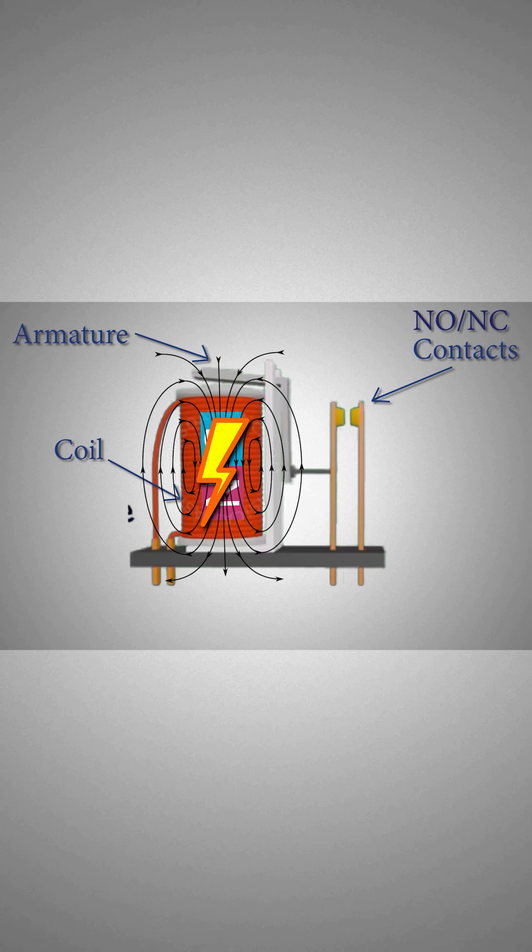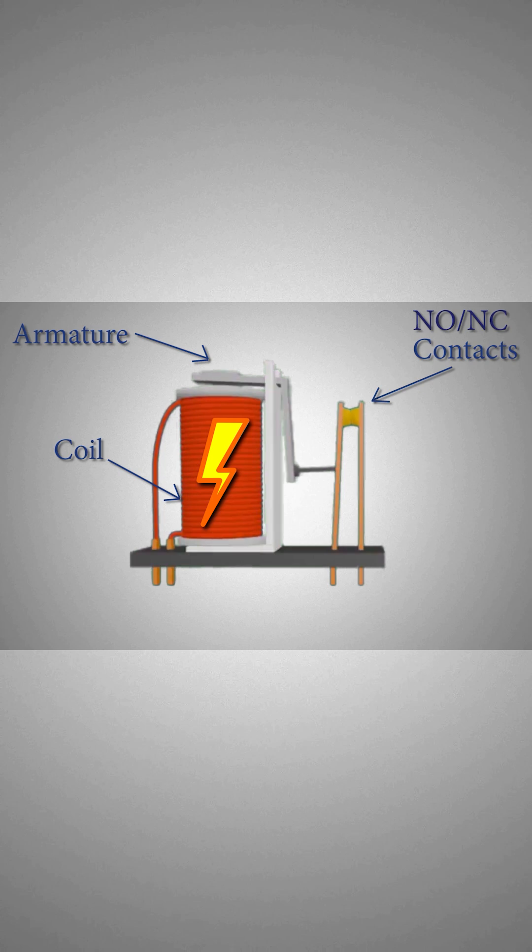This electromagnet attracts armature towards it and the relay contacts move towards each other and closes. The purpose of these relay contacts is to switch on or off the loads, like contactors.